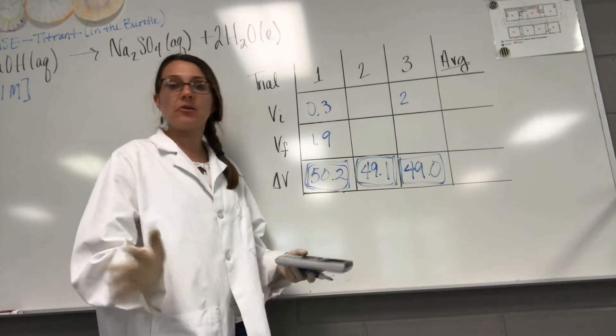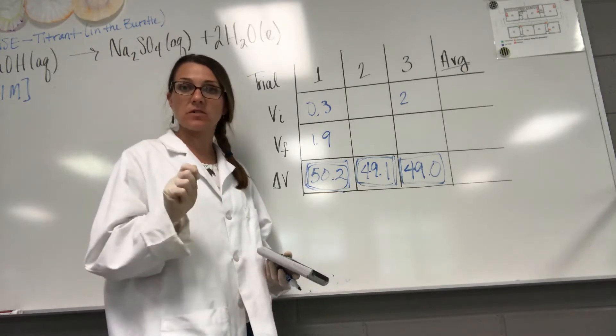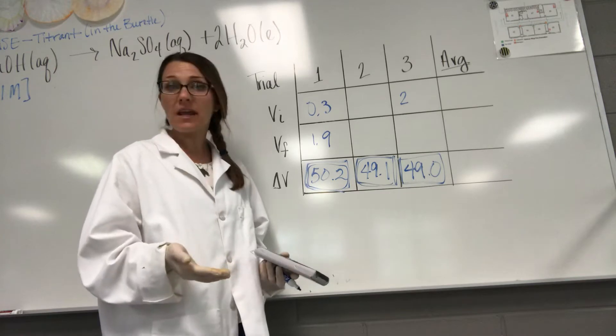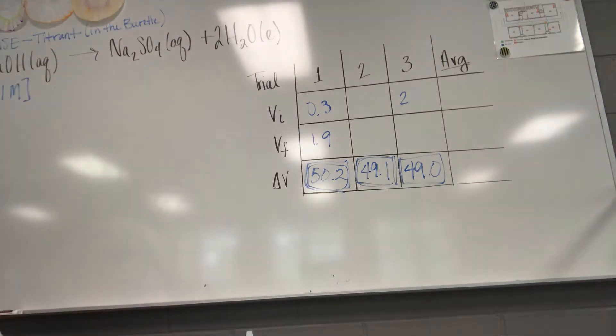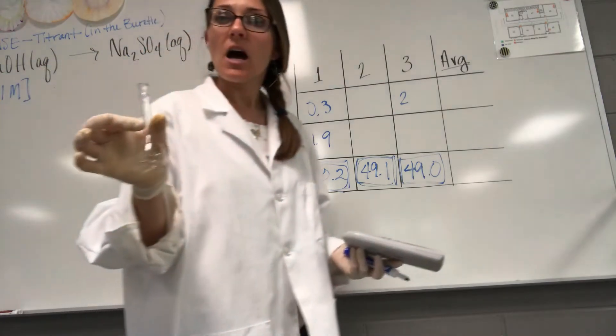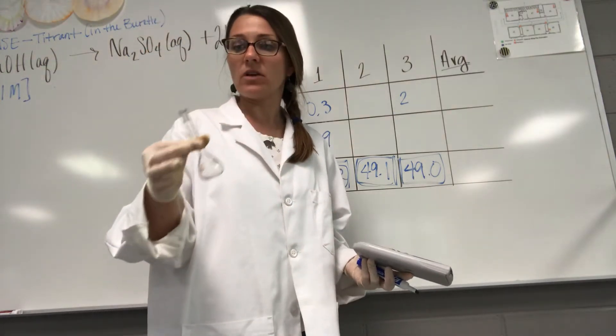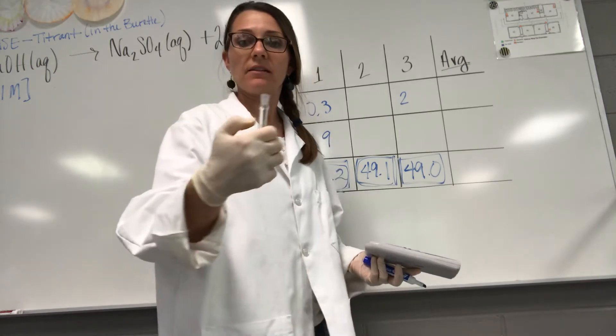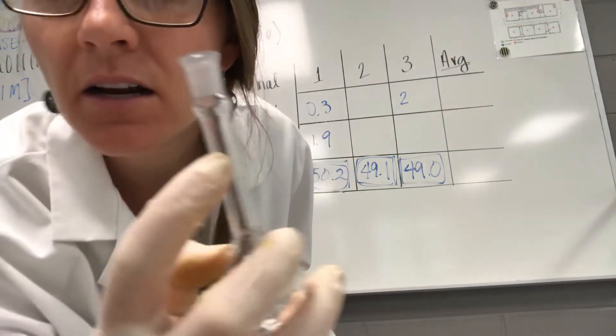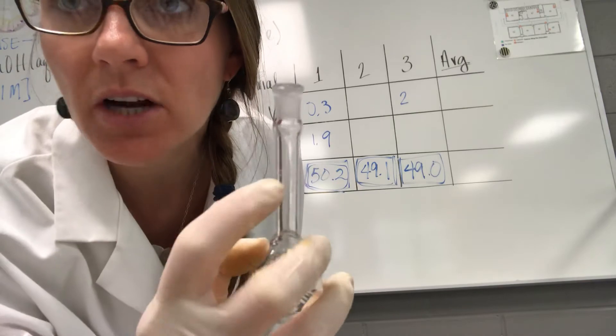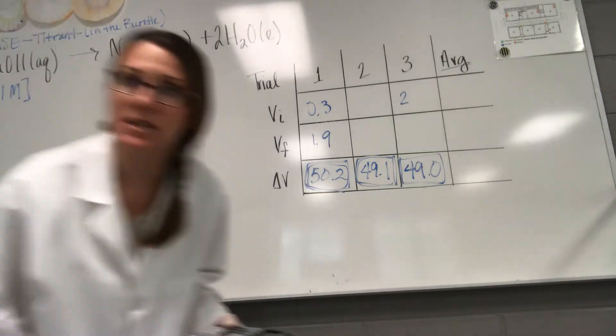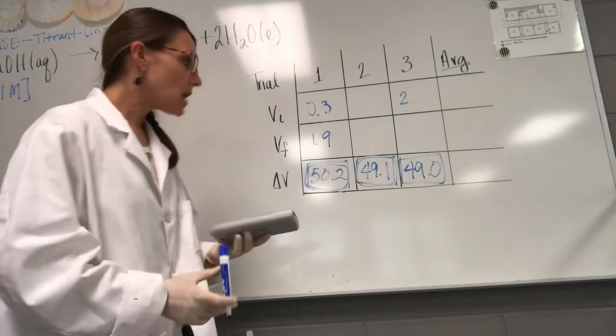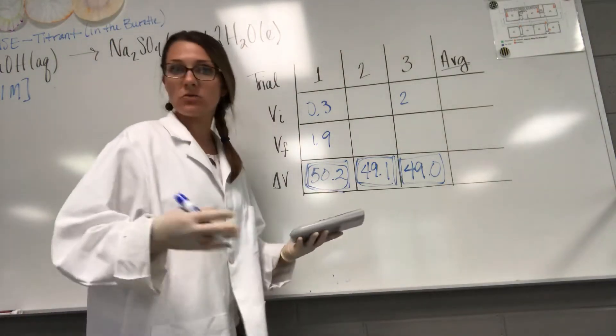Now why would there be some variation? Great question. Obviously there can always be human error when you're actually doing the titration. Another possibility is that I used the volumetric flasks with the 25 mils of sulfuric acid, and it's definitely possible that maybe I overshot or undershot the little line here on the flask, even though I tried to fill it with a pipette so that would be as accurate as possible. There's definitely possibility that it could have had some variation there.